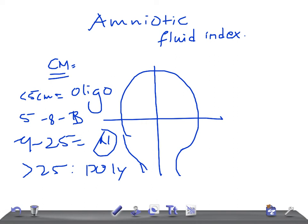So remember, AFI indicates fetal well-being. Remember the levels: less than 5 cm is oligohydramnios, 5 to 8 is borderline, 9 to 25 is normal, and more than 25 is polyhydramnios.